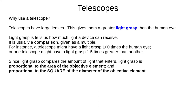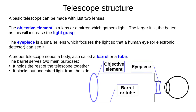So why use a telescope? Telescopes magnify distant objects, but that's not their main purpose in astronomy — they are designed to gather more light and make faint objects appear brighter. Light grasp tells us how much light a device can gather, usually expressed as a multiple or ratio; for instance, a telescope might have a light grasp 100 times the human eye. Light grasp is proportional to the area of the objective element, and proportional to the square of its diameter. You can make the most basic telescope with just two lenses. The objective element is a lens or mirror which gathers light — the larger it is, the better the light grasp. The eyepiece is a smaller lens which focuses the light so a human eye or electronic detector can see it. A proper telescope also has a barrel or tube which holds everything together and blocks undesired light from the sides.